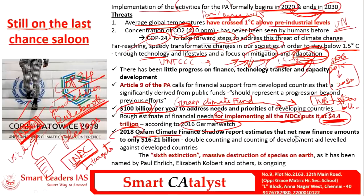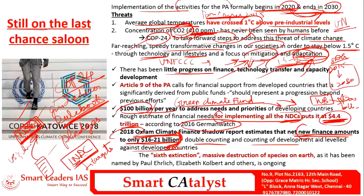The Oxfam report states that the total net finance transferred from developed nations and other institutions to developing nations stands at only 16 to 21 billion dollars, which is very little. There is also some double counting in the calculation of funds. Article 9 of the Paris Agreement calls for financial support from developed to developing countries, and the author raises concern that if this situation continues, the world may enter the phase of the sixth extinction — massive destruction of species on Earth.